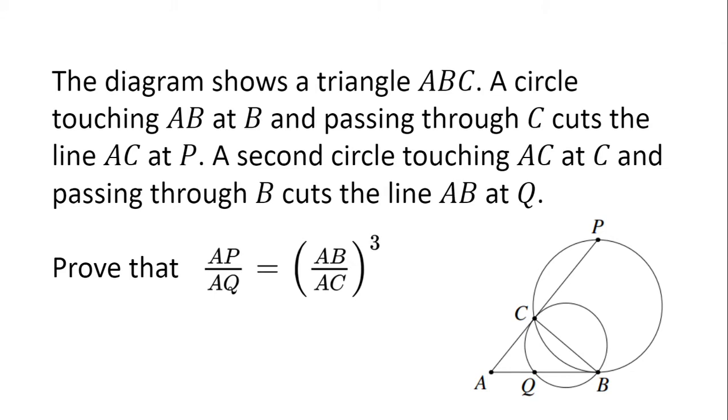The diagram shows a triangle ABC. A circle touching AB at B and passing through C cuts the line AC at P. A second circle touching AC at C and passing through B cuts the line AB at Q.